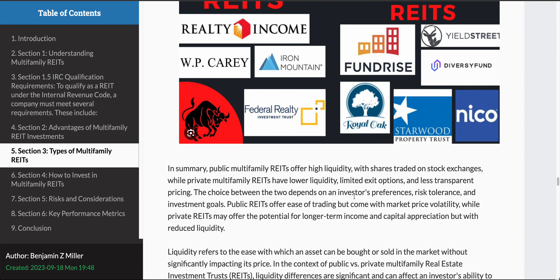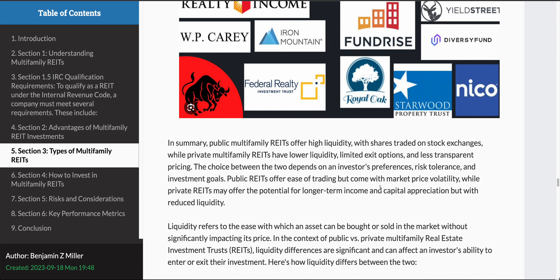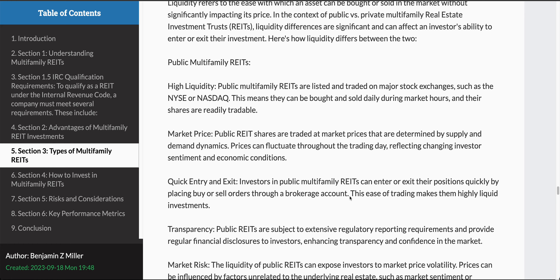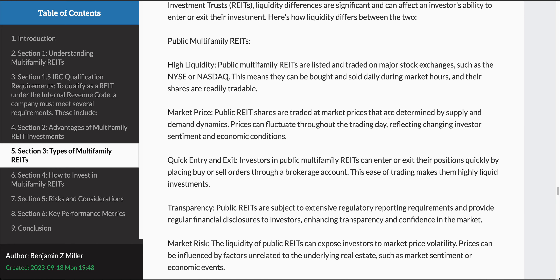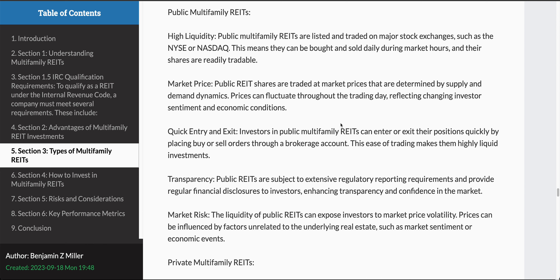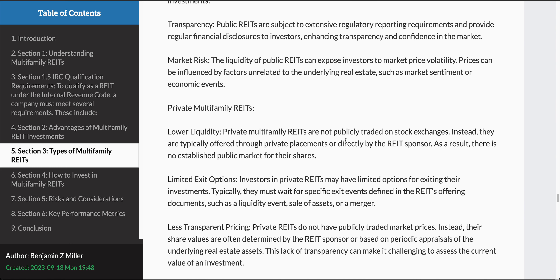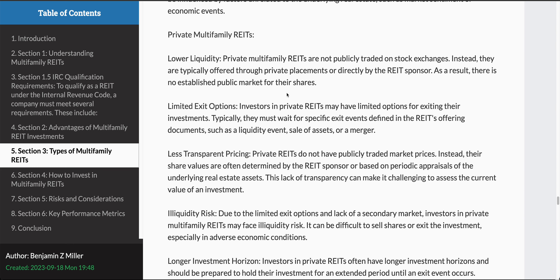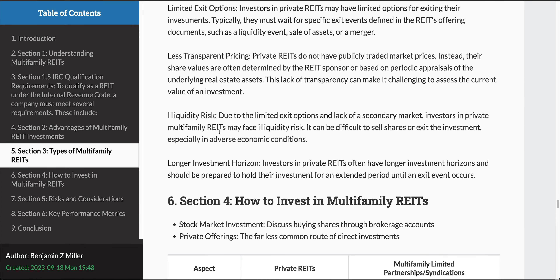Public multifamily REITs offer high liquidity with shares traded on stock exchanges, while private multifamily REITs have far lower liquidity, limited exit options, and less transparent pricing. That's a big downside of private REITs. But public multifamily REITs attract a lot of people just because of the lure of being able to get their money back quickly — though you're going to pay a significant price for that if you purchase one. Private multifamily REITs are illiquid.